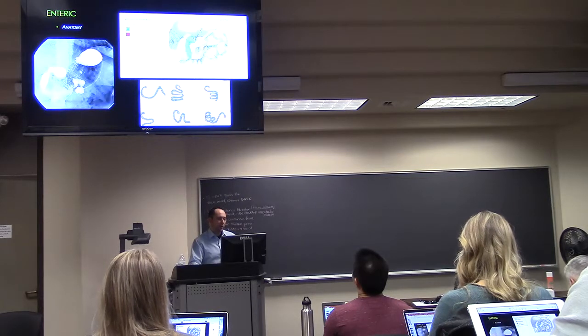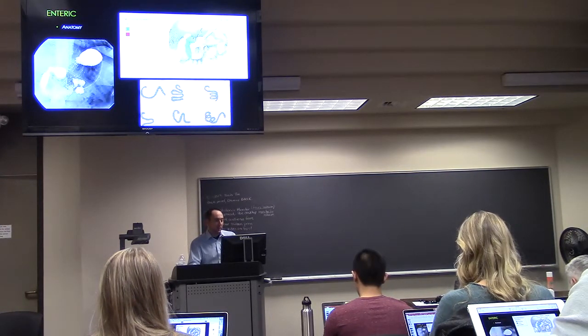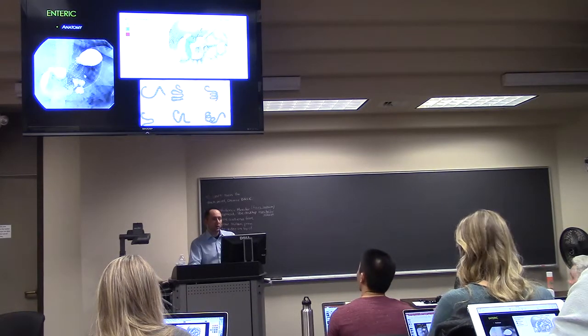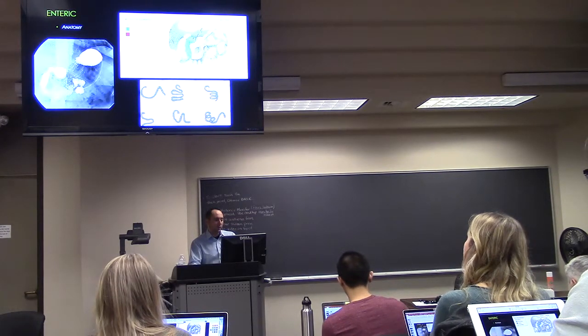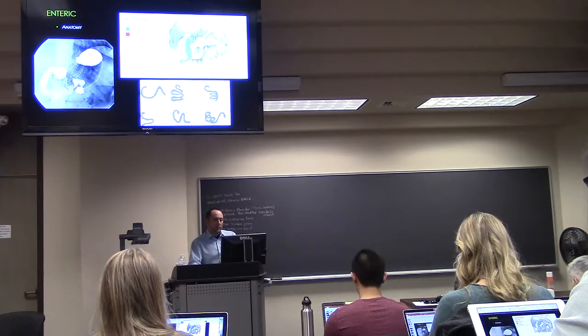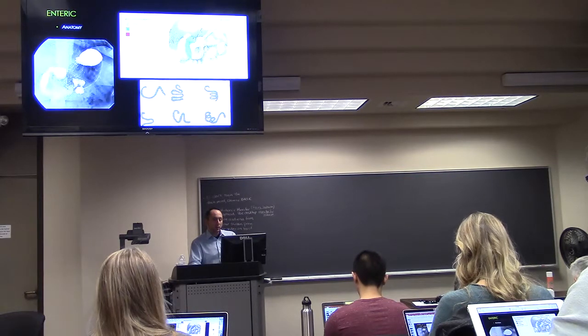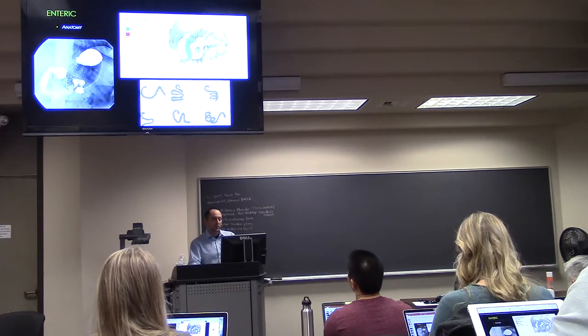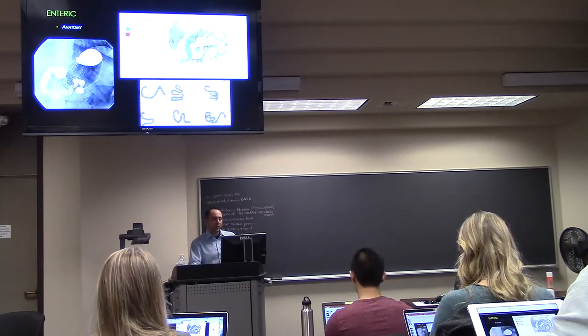The ligament of Treitz is right here. It holds up this segment right here. This is a ligament that you can't really see, but this is the expected structure. I want to drill this into y'all's heads because you're going to see this a lot. The pancreas sticks in here, and the pancreatic duct empties into this portion of the duodenum that's retroperitoneal. That's how your pancreatic juice is mixed in.